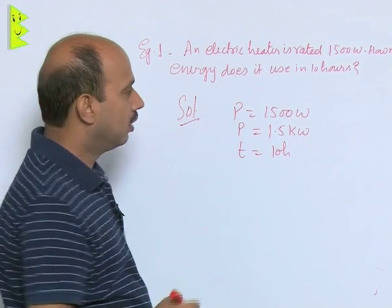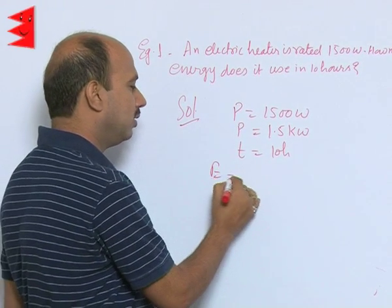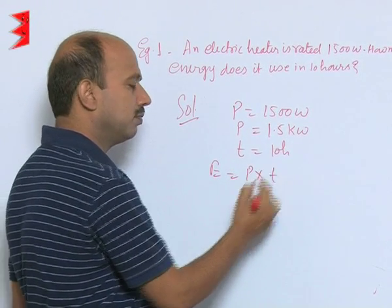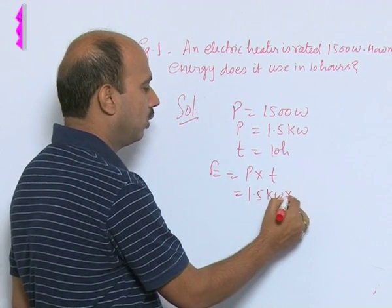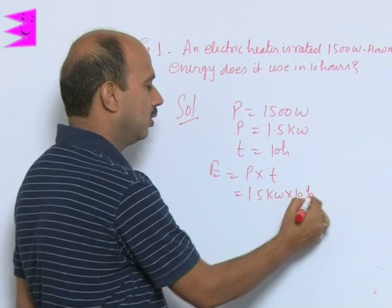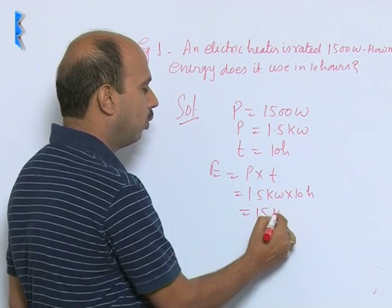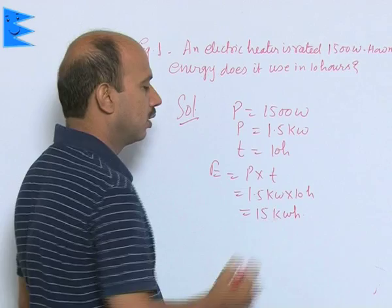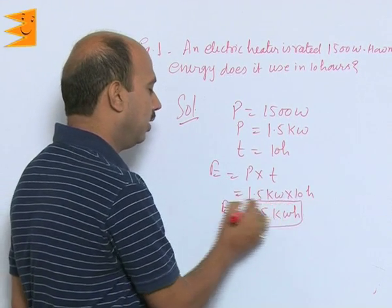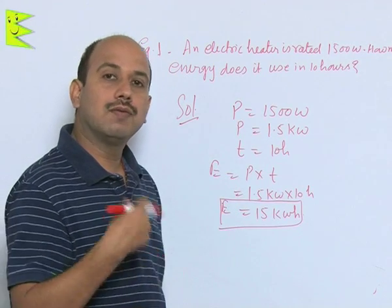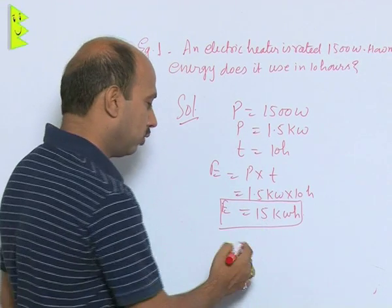We can write here energy. What is formula for energy is equal to power into time. So we can write here 1.5 kilowatt into 10 hour, so that is 15 kilowatt hour. This is the energy consumed. I have mentioned this energy in commercial unit of energy. You can convert into joules also.